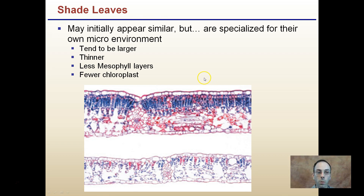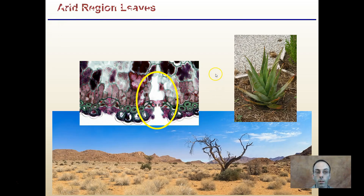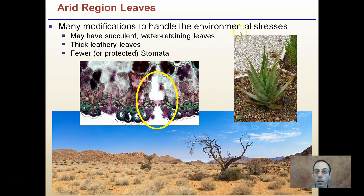Arid region leaves have many modifications to handle environmental stresses. They may have succulent water-retaining leaves like aloe, with thick leathery texture. They also have fewer and/or protected stomata — the stomata are recessed into the leaf rather than located right at the surface, protecting them and reducing water loss, creating an environment that can handle more arid conditions.